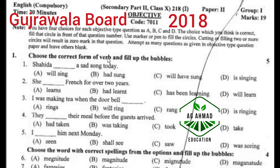Choose the correct form of verb. A option: Shahida is singing a sad song today. B option: She has been learning French for over two years. C option: I was making tea when the doorbell rang. D option: They had taken their meal before the guest arrived. A option: I shall see him next Monday. B option.